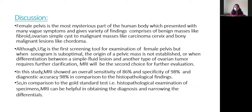Discussion: The female pelvis is the most complex part of the human body, presenting with many vague symptoms and a variety of findings, ranging from benign masses like fibroids and ovarian lesions to malignant masses like carcinoma cervix, and sometimes bony malignant lesions like chordoma as seen in one of our cases. Although ultrasound is the first screening tool, when sonography is suboptimal, the origin of pelvic masses is not established, or when differentiation between a simple fluid lesion and another type of ovarian tumor requires further clarification, MRI is the second choice for further evaluation. MRI showed an overall sensitivity of 86%, specificity of 98%, and diagnostic accuracy of 98% compared to histopathological findings, confirming that MRI is very helpful in obtaining a diagnosis and narrowing differentials in pelvic masses.